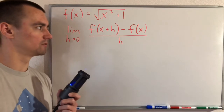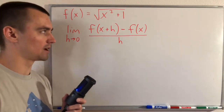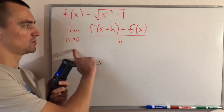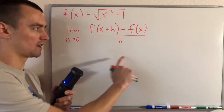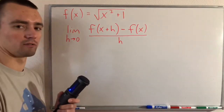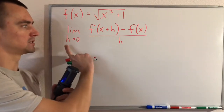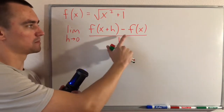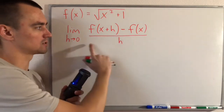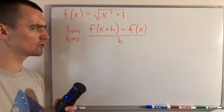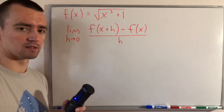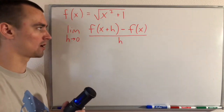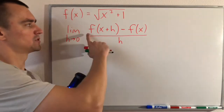When you're trying to use the definition of a derivative to find the derivative of a function, you're essentially just using this formula: the limit as h goes to zero of [f(x+h) − f(x)] / h. There are really two pieces to think about here.